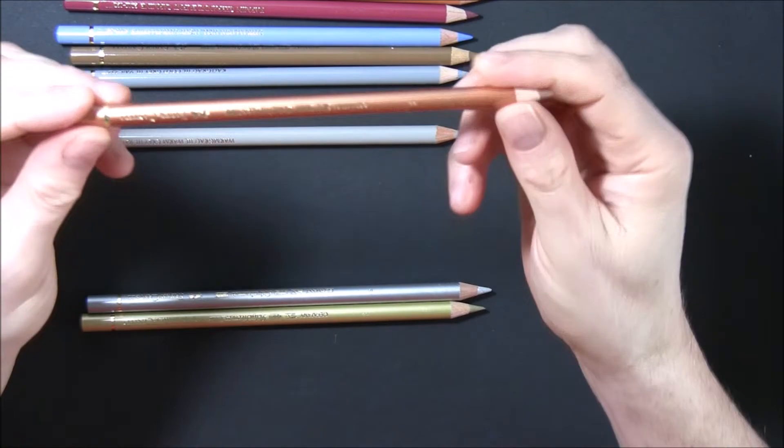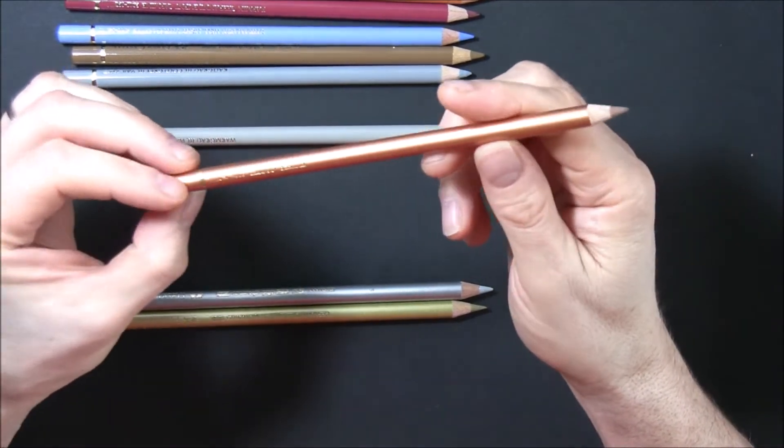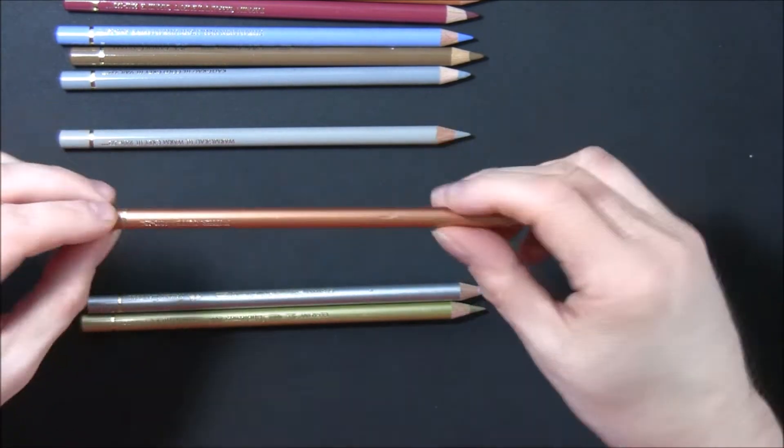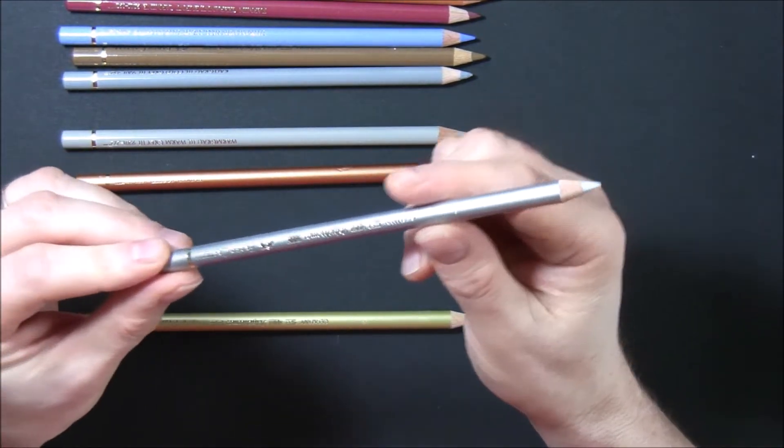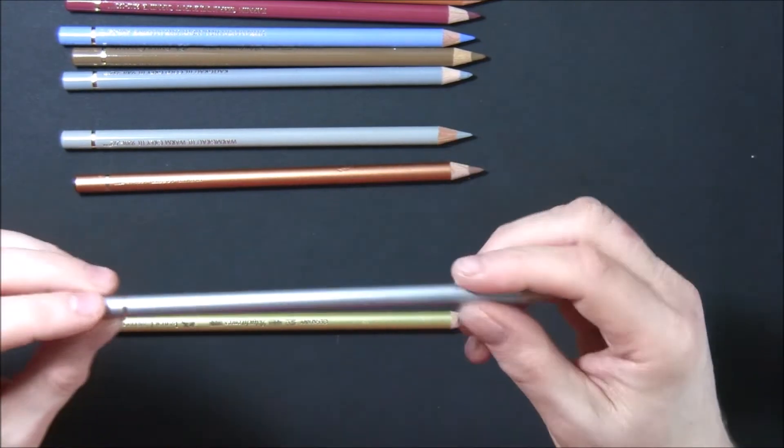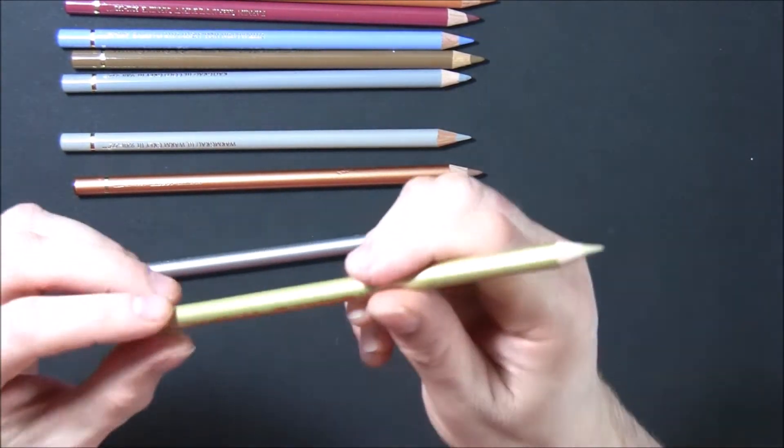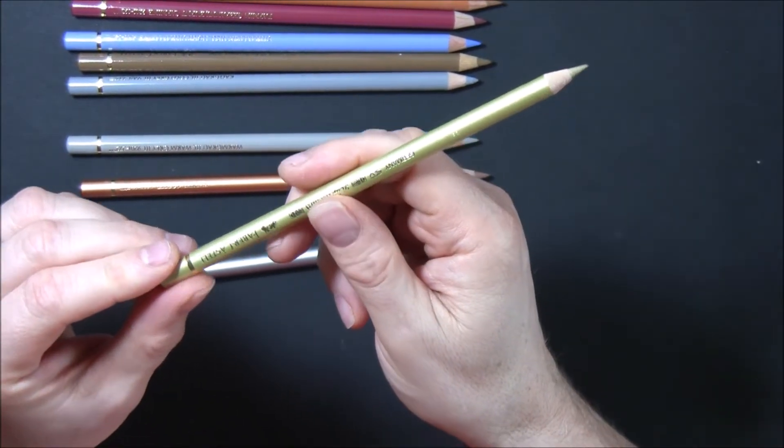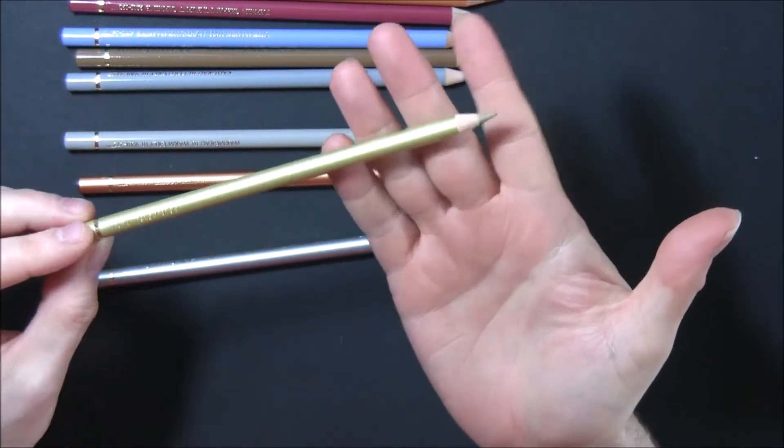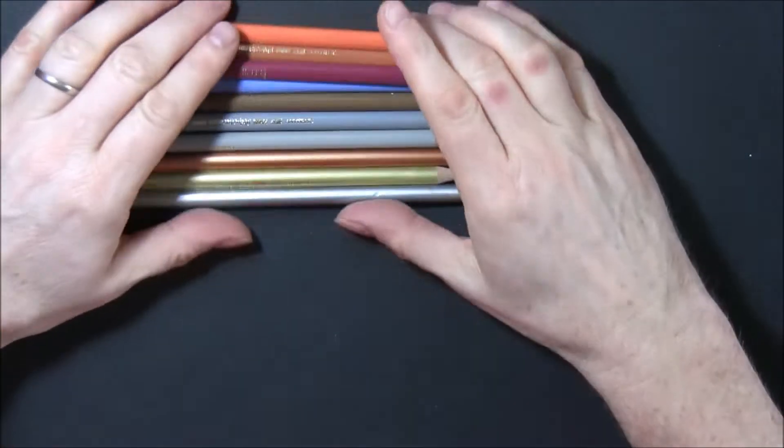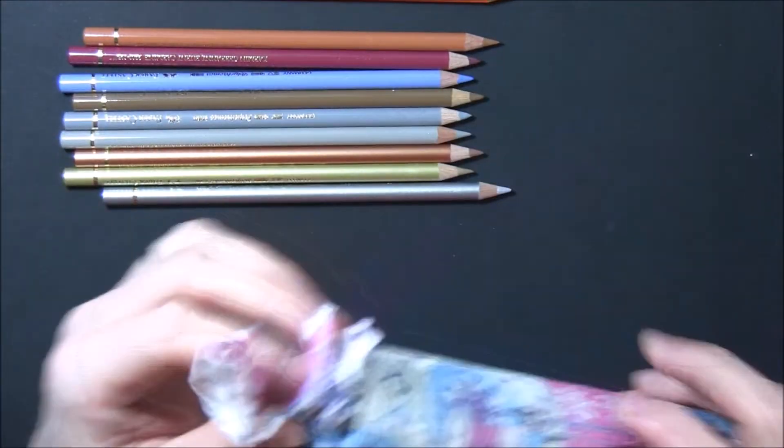These next three pencils I specifically wanted: 252 copper, 251 silver, and 250 gold. I just wanted to get these three colors just to see what they were like, and I might do a drawing just with those three colors or maybe those three colors in black. I'll have to wait and see what I can come up with.